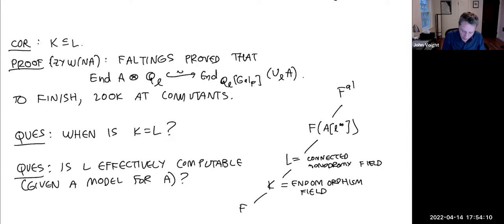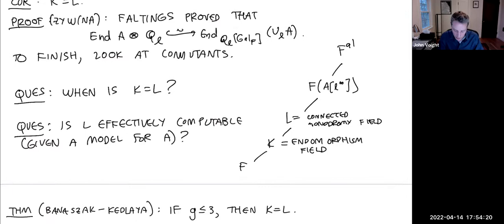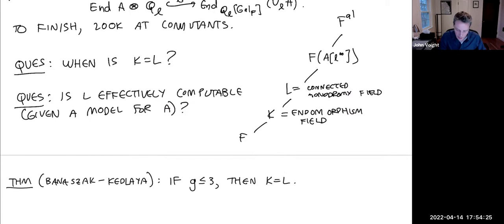Back to the question: is K = L always? The first relevant theorem is a theorem of Moonen and Zarhin saying that if the dimension of your abelian variety is at most 3 — elliptic curves, abelian surfaces, abelian threefolds — then necessarily K = L. So to find cases where K ≠ L, we need to look at fourfolds and beyond.